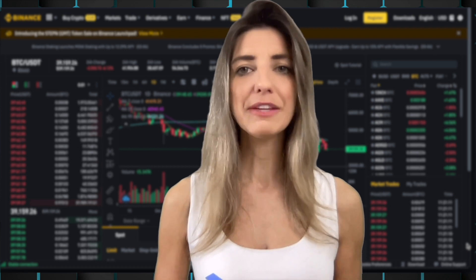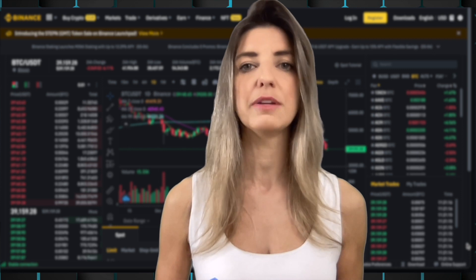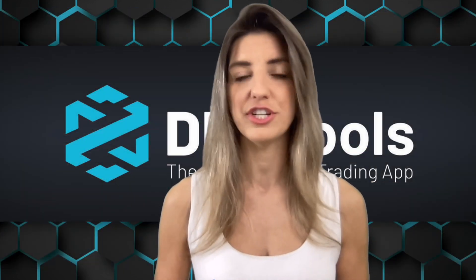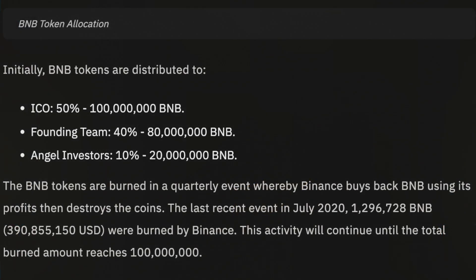BNB has a maximum supply of 200 million, with around 165 million BNB currently in circulation. 50% of its supply was allocated to public sale, 40% of the total supply — about 80 million BNB — was distributed to team and founding members, and 10% was split among angel investors. Binance has conducted 16 quarterly burnings of its token, which will continue until 100 million BNB are destroyed.